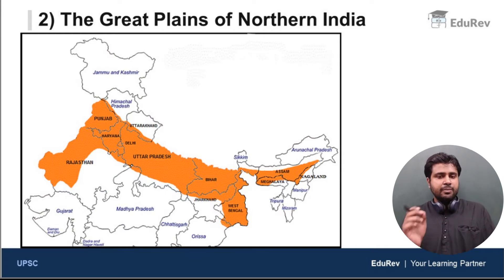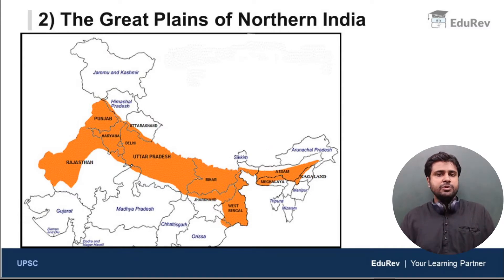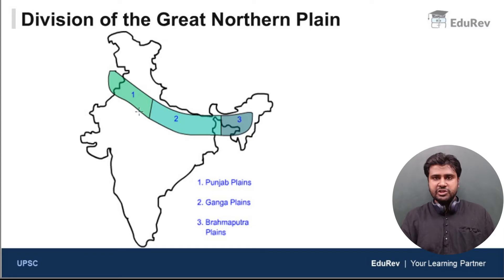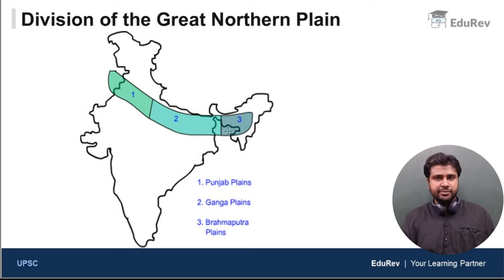For now, just keep one thing in mind: these plains are very, very thickly populated and are very suitable for agriculture. We can divide the great northern plain into three parts. Starting from the west, we have the Punjab plain; in the middle, we have the Ganga plain; and the easternmost part is the Brahmaputra plain.